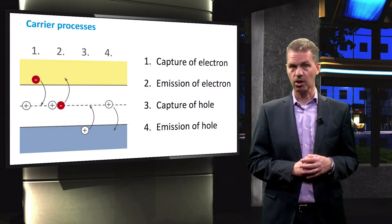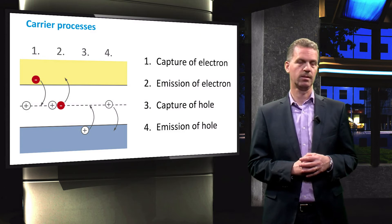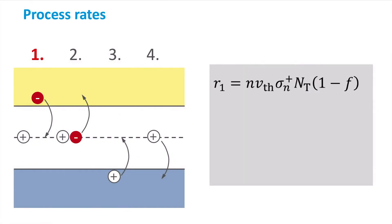We will now discuss the rates of these four processes. The first process rate is given by the following expression. Since it involves the capture of an electron, it is proportional to the electron concentration N.